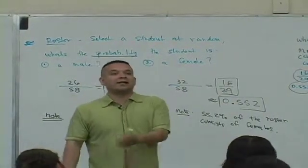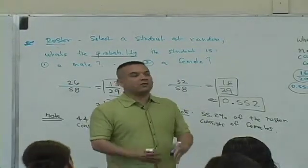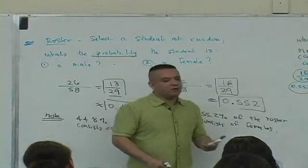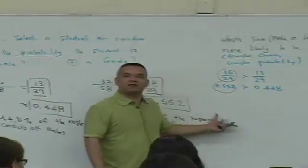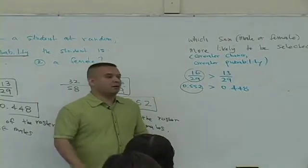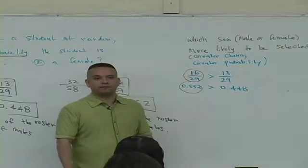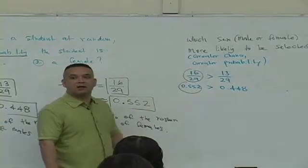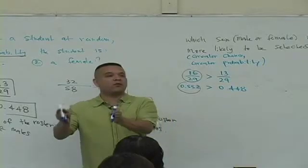Similarly, it's less likely to select a male. So this is some of the language: more likely, less likely. And remember, this is probably one of the most important math classes you could ever take because it teaches you how to think, how to make decisions — what's likely to happen, what's not likely to happen. We're giving you the language and how to think about this stuff. Just because there's two sexes doesn't mean they're equally likely.